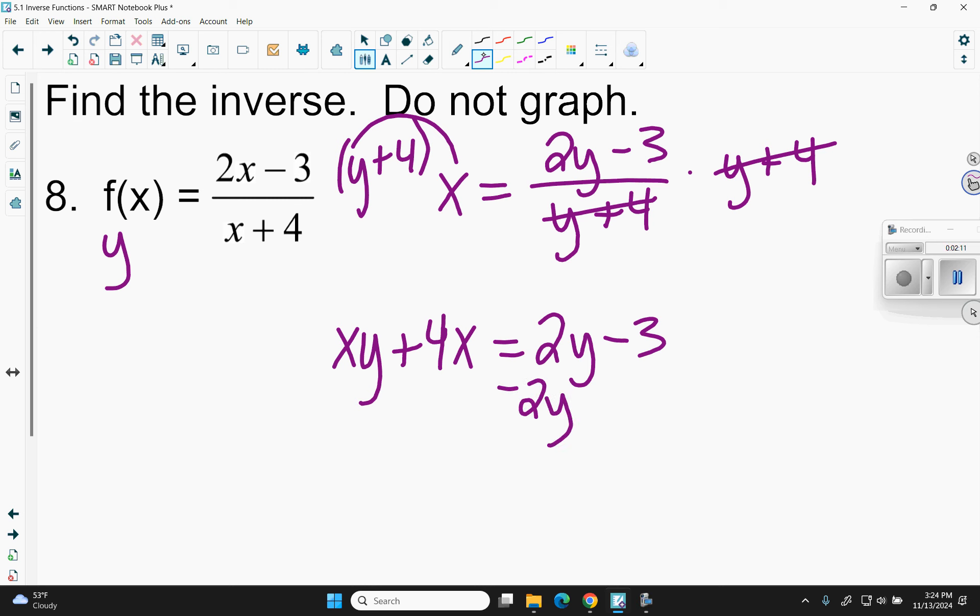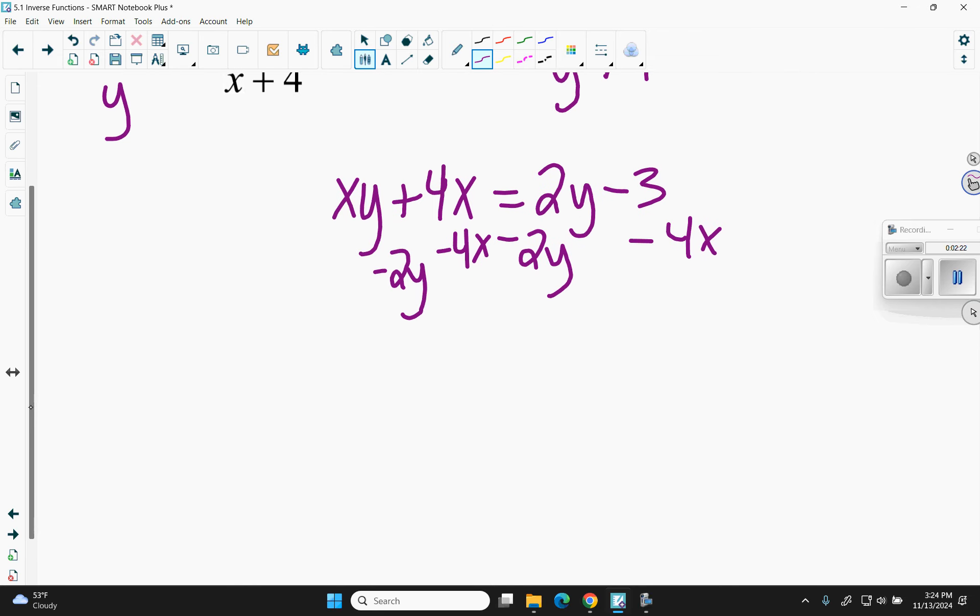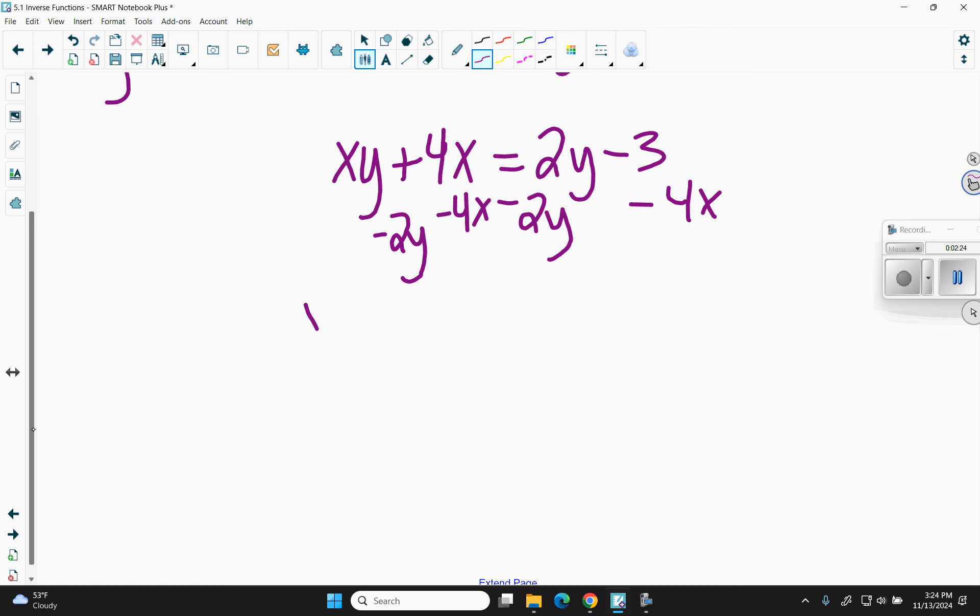So I'm going to subtract the 2y over here, and then I'm going to subtract the 4x to the other side. And when I do that, maybe over here now I have xy minus 2y equals negative 3 minus 4x.